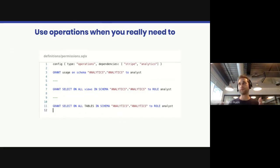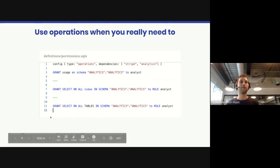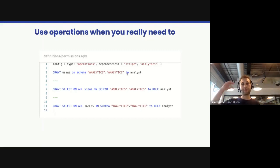Lastly, we have the operations type, which lets you write any SQL. We generally encourage limiting its usage to things that really require it — creating tables, views, incremental tables, and inserts should be done using the proper types. But for things like granting usage, which Dataform doesn't have a dedicated type for, you can use operations. For example, in Snowflake, after creating tables called stripe and analytics, you may want to grant usage and select on views and tables to different roles. You'd typically add this at the very end of your dependency tree — after your pipelines run, this script executes to grant access to everyone.